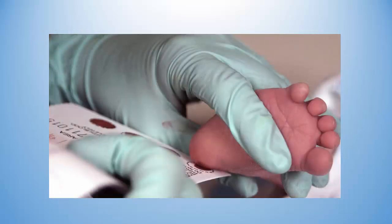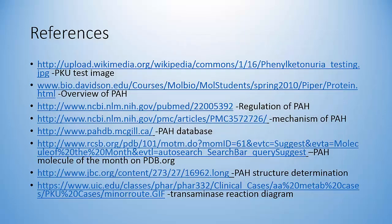The disease can be detected by a blood test after birth. Treatment involves a strictly controlled diet with extremely low levels of phenylalanine to avoid excess buildup in the body. For more information on phenylalanine hydroxylase, check out the listed references.